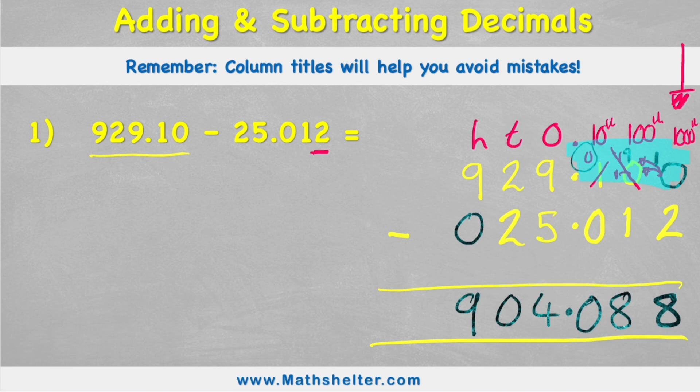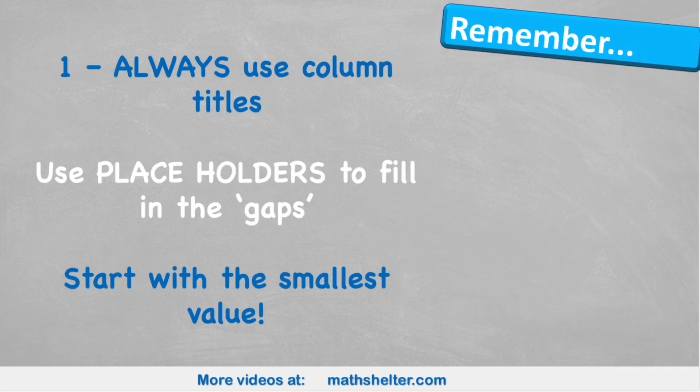Okay, so let's have a look at what to remember. Always use our column titles. I can't emphasize enough how important column titles are for avoiding making mistakes. Use placeholders to fill the gaps. If you have gaps in your question, fill them with placeholders. Again, just helps you avoid any small mistakes in addition, but is really important for subtraction. And we start with the smallest value, which in this case could be anything - could be tenths, hundredths, or thousandths.